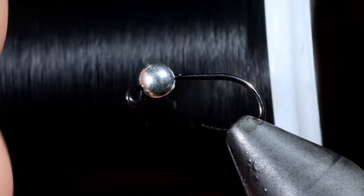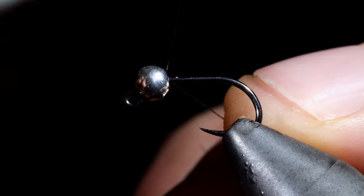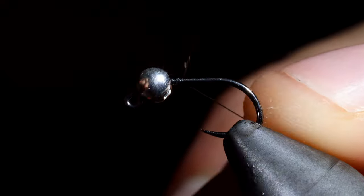We're going to be tying a natural biot midge. We'll start off with some flat black thread and secure that to our hook shank.